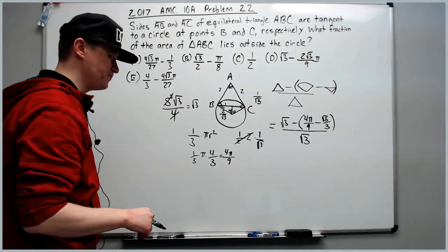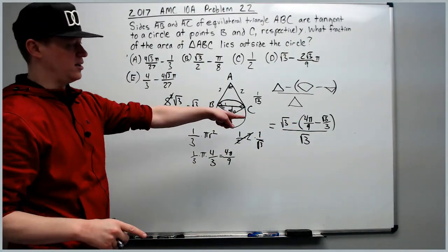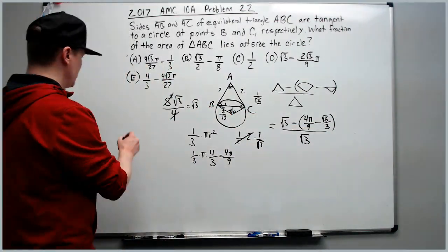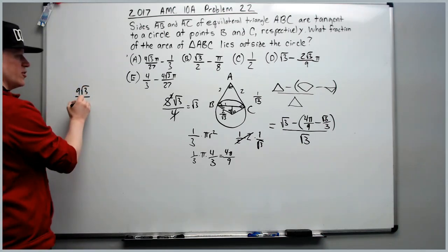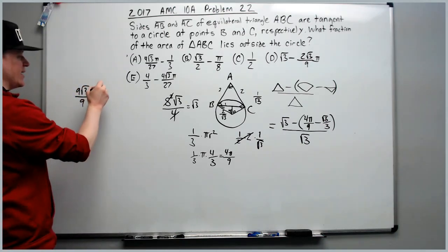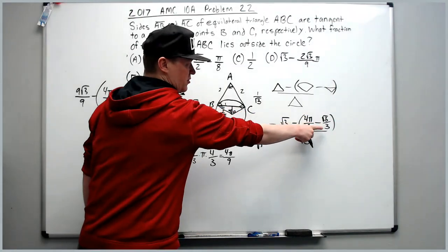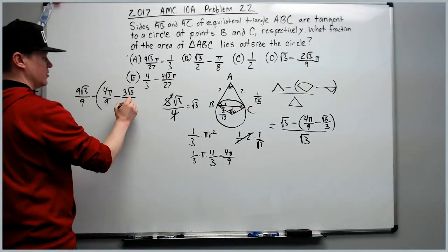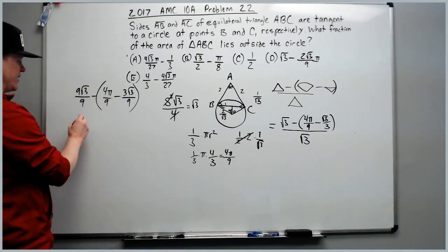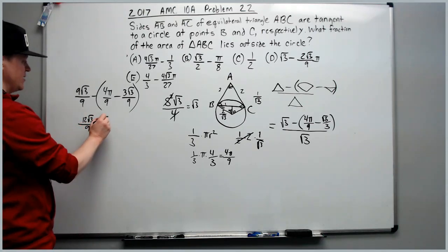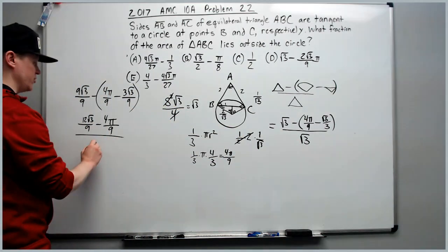Now for the cleanup. Let's start with the numerator. I'd like to create 9s on all of the denominators that are in the numerator. So we're going to call the root 3 right here 9 root 3 over 9, then minus 4 pi over 9, and that will be minus 3 root 3 over 9. Let's clean that up. 9 root 3 minus negative 3 root 3 is 12 root 3 over 9 minus 4 pi over 9, all of this is still over the square root of 3.